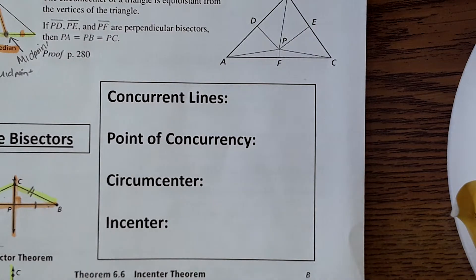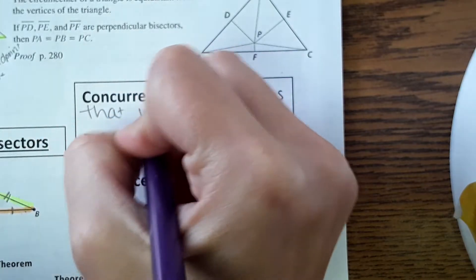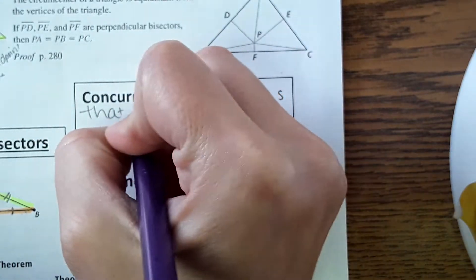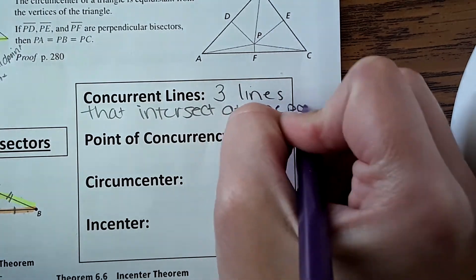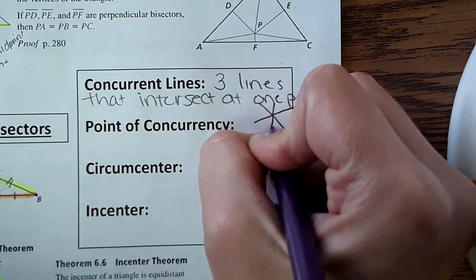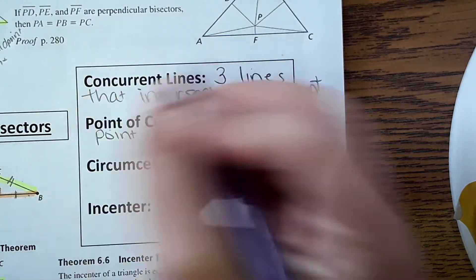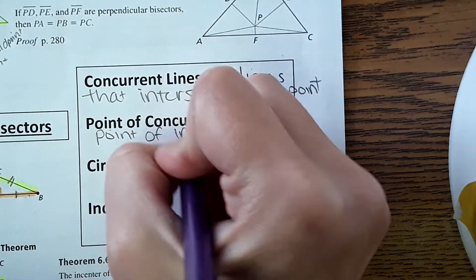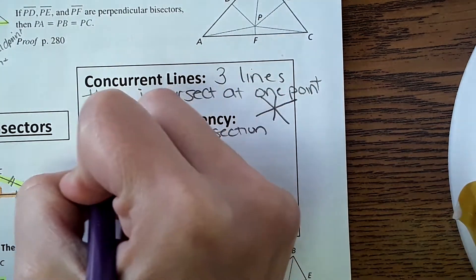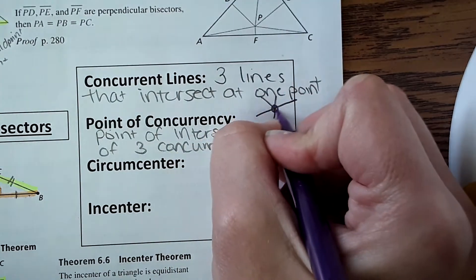Concurrent lines are three lines that intersect at one point. Concurrent lines would look like three lines that intersect at one point. The next term is point of concurrency, which you may predict is just that point of intersection of three concurrent lines — so the point of concurrency would be this point right here.